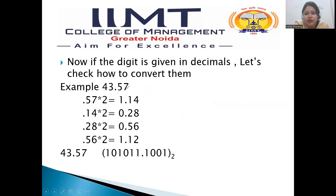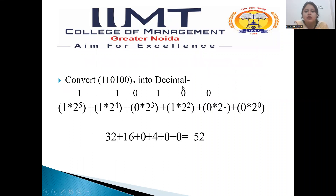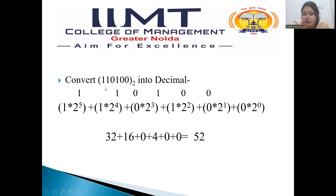I hope it is clear for you all. Kindly do not confuse — please make sure to convert the integer part first, then the fractional part. Now we will check how we convert from a binary number into a decimal number. As I told you earlier, in a decimal number the power of 10 increases, but in a binary number the power of 2 increases.